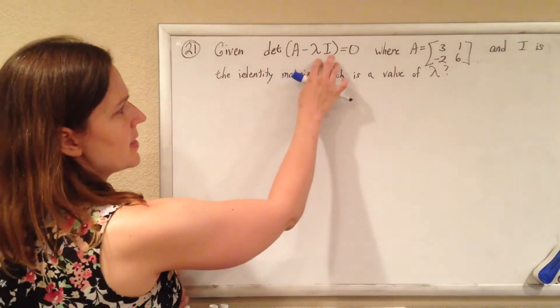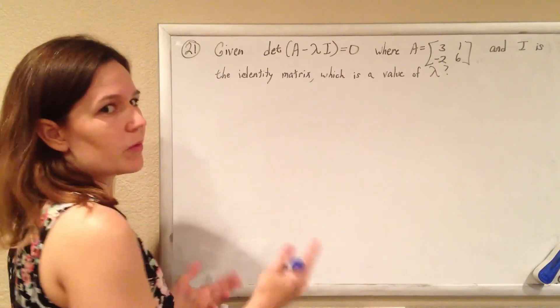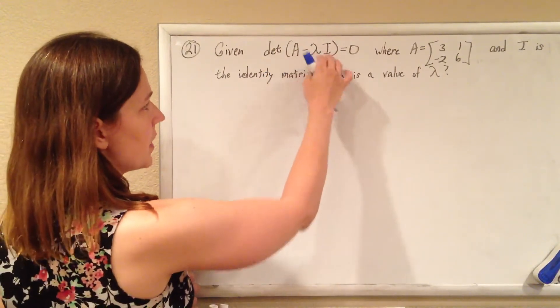So they want the determinant of A minus lambda I to equal zero. Let's just figure out what A minus lambda I is, right?